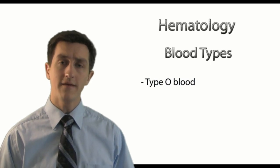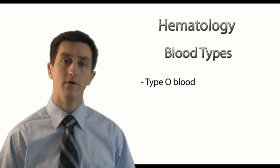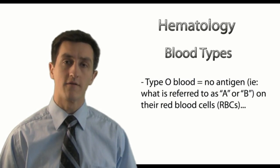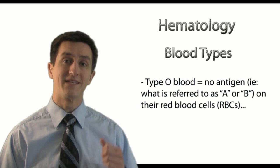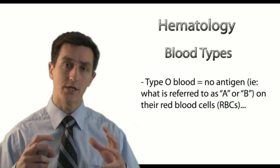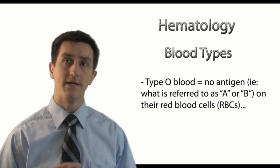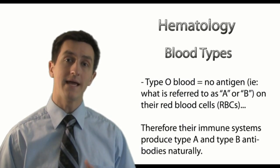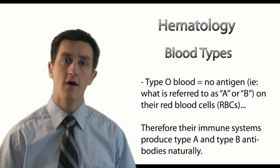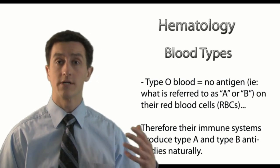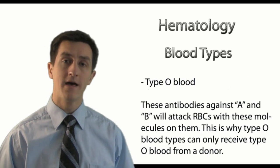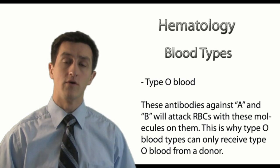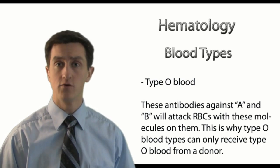Type O blood basically refers to the fact that people with this type of blood have no antigen on their red blood cells — meaning they do not have type A antigen or type B antigen attached to the red blood cell. Because of that, they produce both type A and type B antibodies naturally. So when they receive type A, type B, or type AB blood, they will attack those red blood cells and eventually lead to hemolysis and a transfusion reaction.